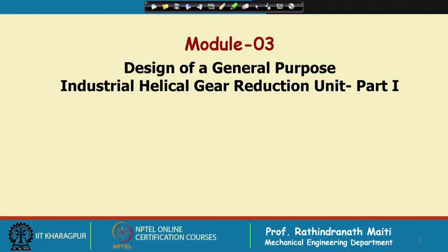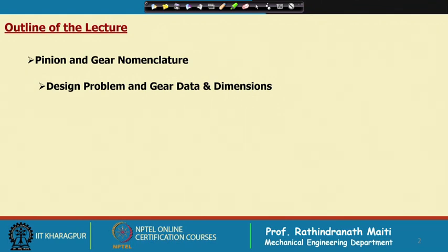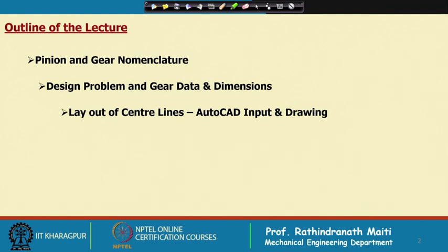We are continuing with Design of General Purpose Industrial Helical Gear Reduction Unit. This is module 3, part 1 of the design, lecture number 15, where we will make a first layout of the gear unit after gear design. The outline of this lecture covers pinion and gear nomenclature required for the drawing, the design problem and gear data and dimensions, layout of center lines, and how to give input in AutoCAD and view the output drawing.